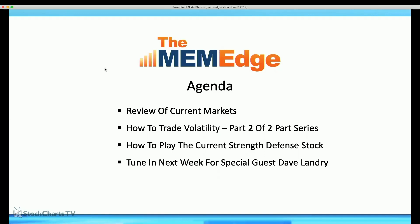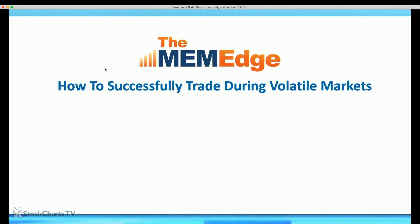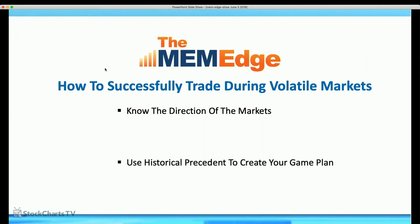Let's go back to the presentation and get into volatility. You'll see the significance of not only having a strong sense of where the broader markets are, but also having other information so you can actively trade this volatility. To successfully trade during these volatile markets — which are very headline-driven — you want a strong sense of market direction, and you want an exit plan in place. We can see how quickly the markets can move in either direction.